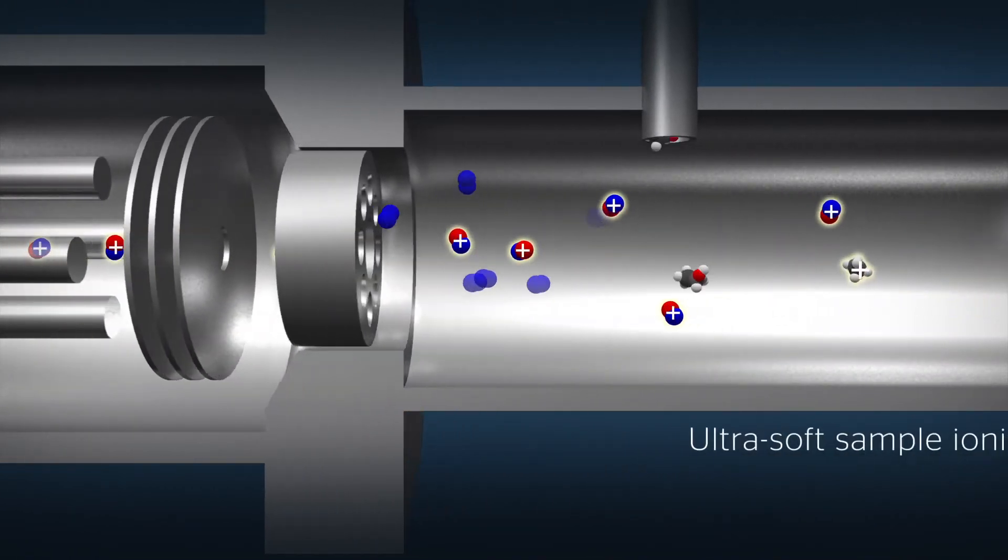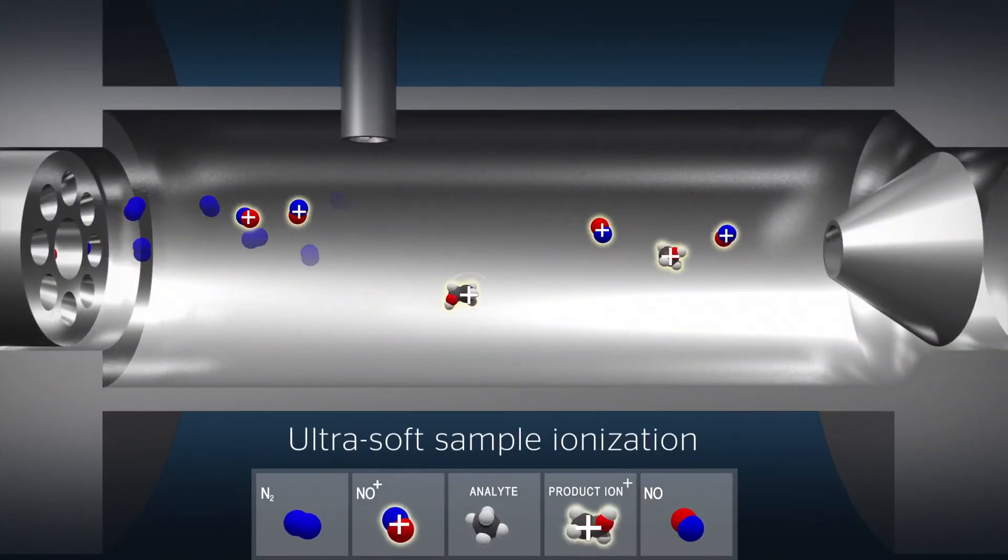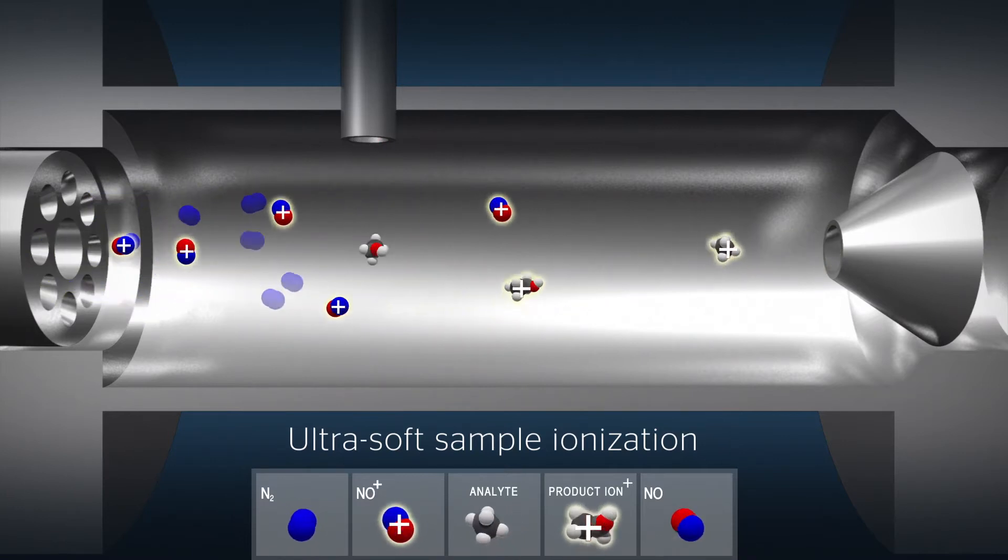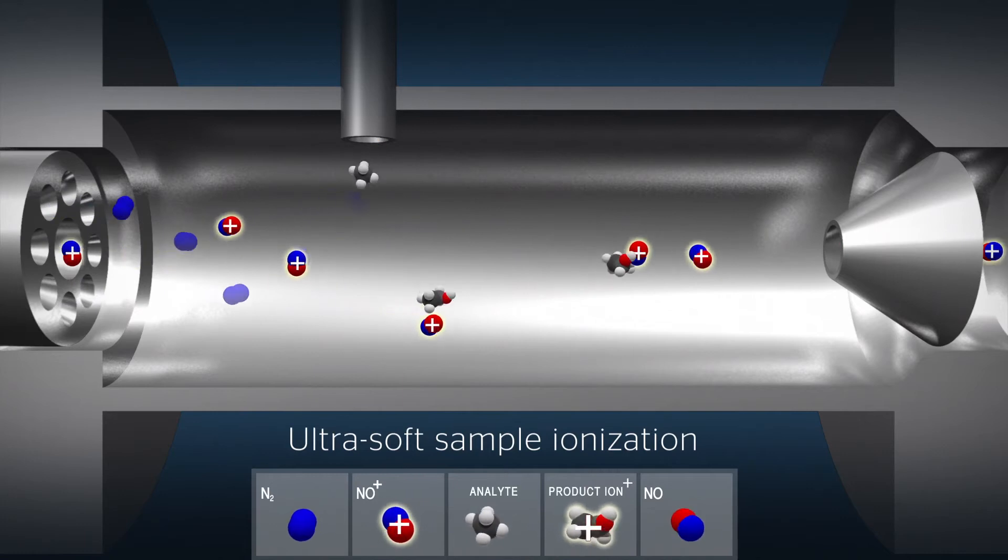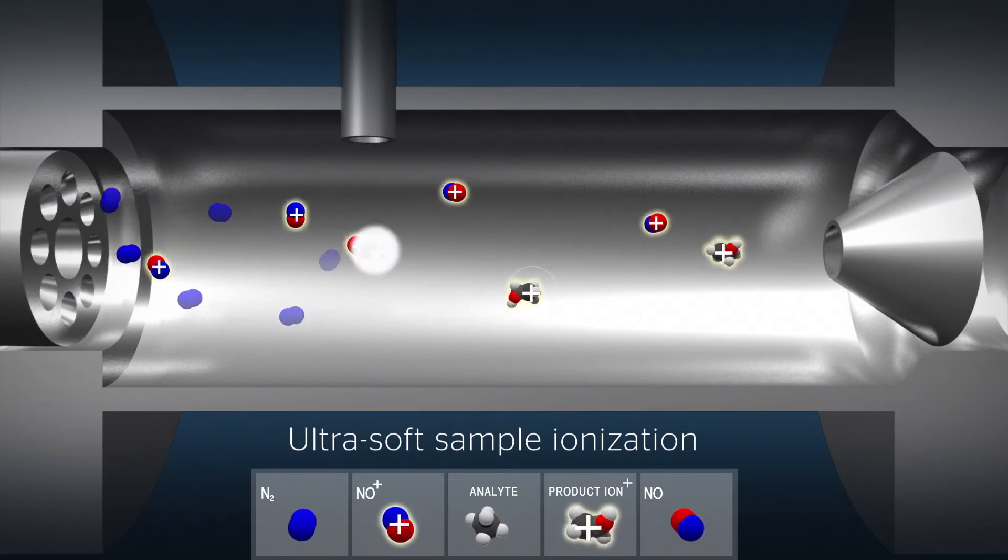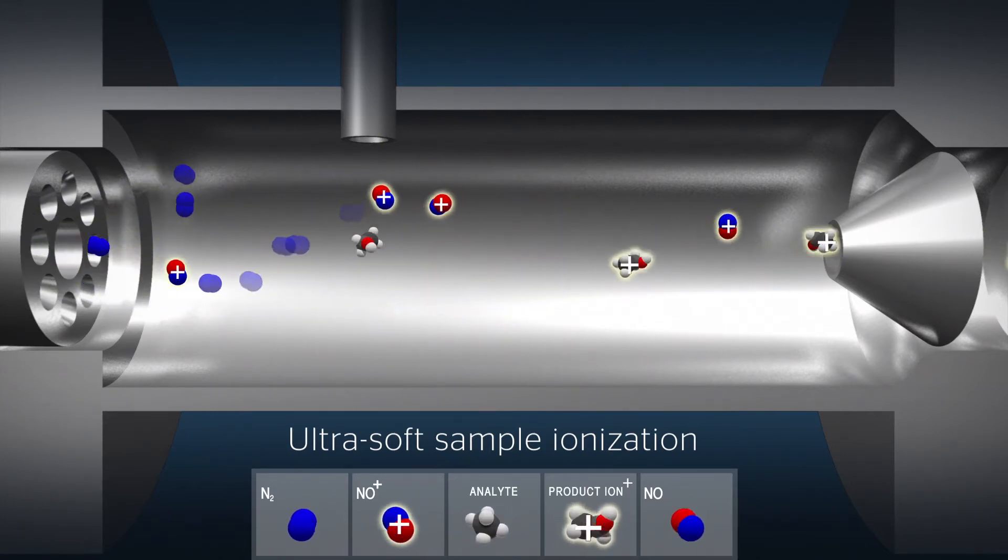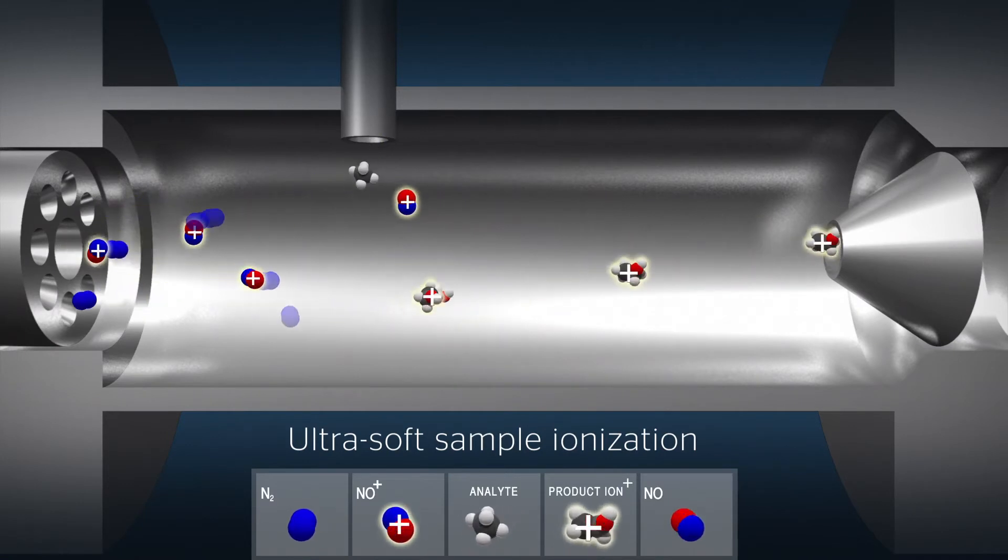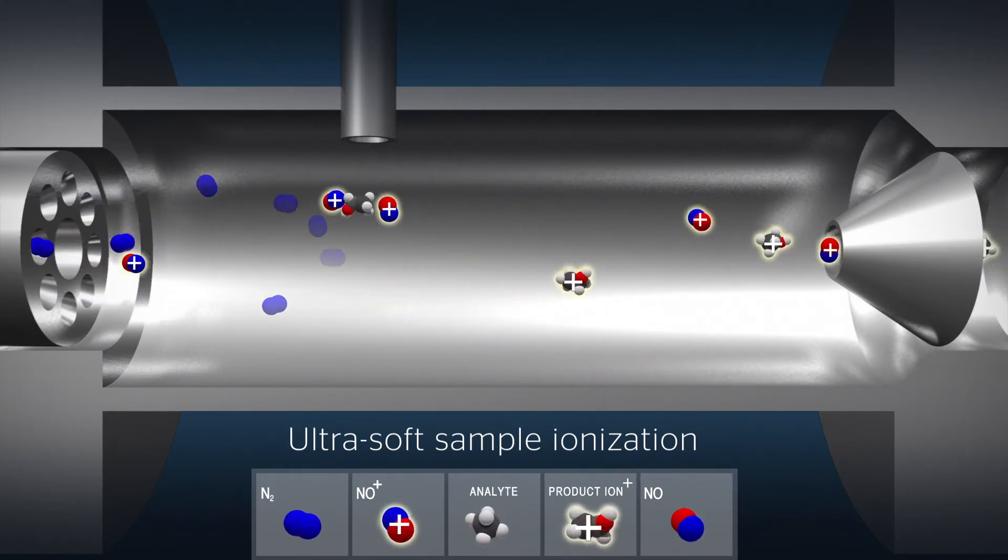Entering the flow tube is a continuous stream of reagent ions and sample gas. These are conveyed down the flow tube by either a helium or nitrogen carrier gas. This results in highly controlled chemical reactions which give stable and predictable ionization products for all compounds in the sample.